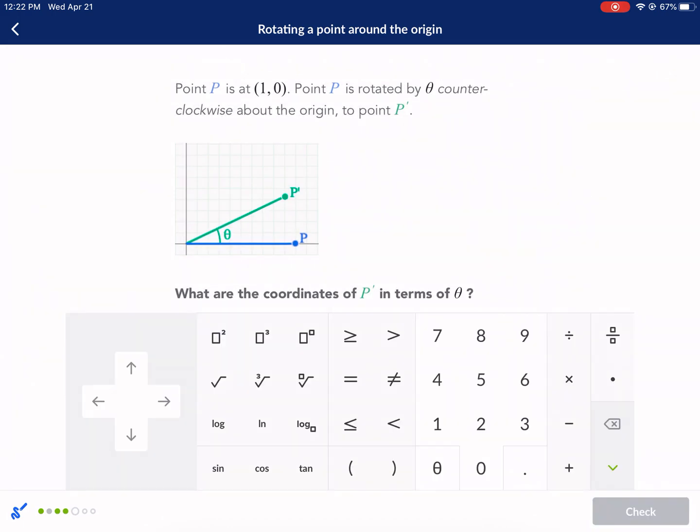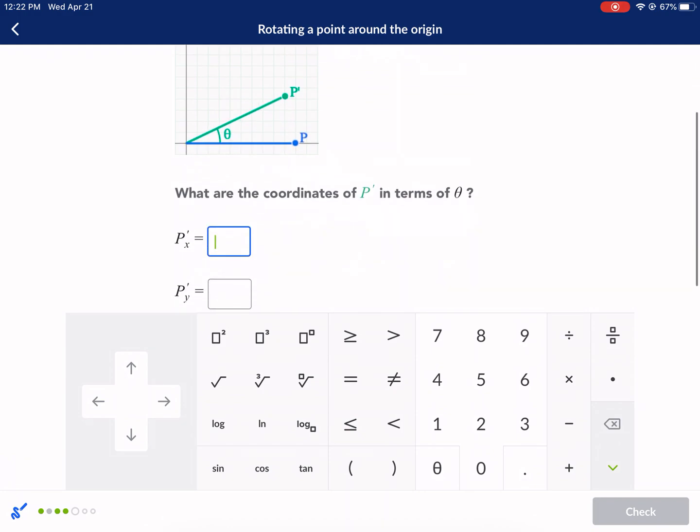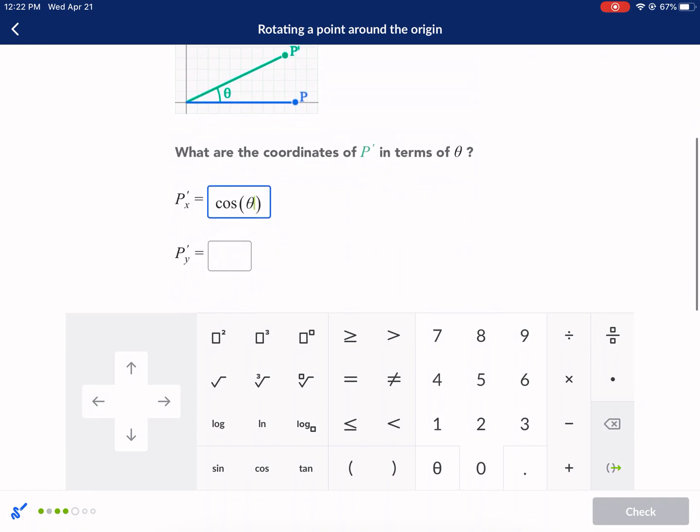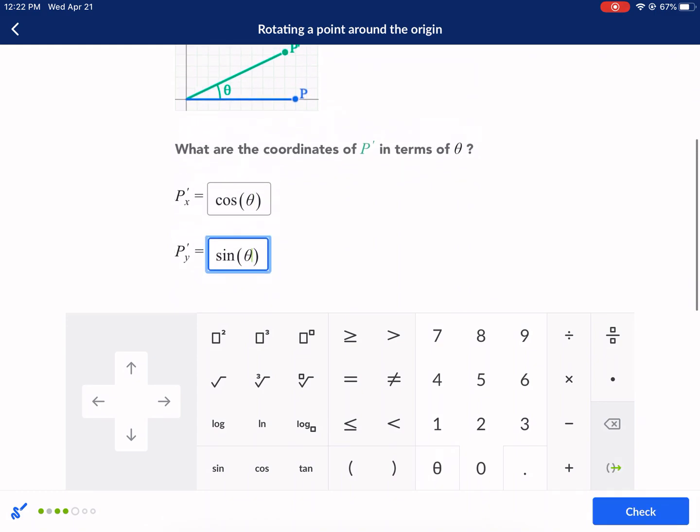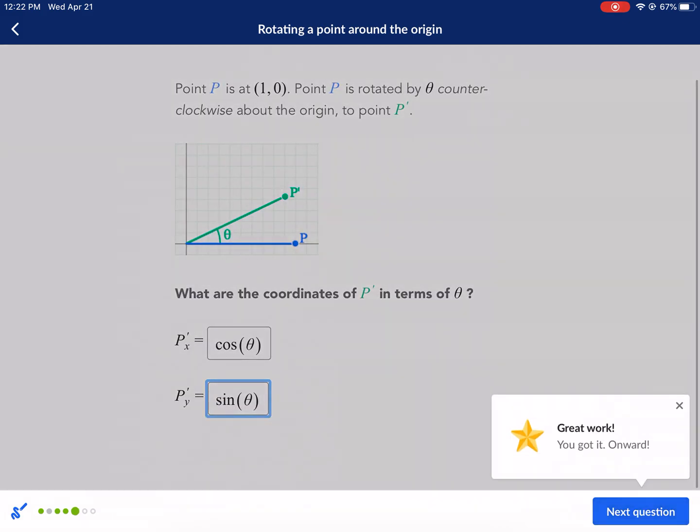In terms of theta, we already talked about this. It's in the first quadrant. So we can go ahead and say that it's cosine. And it's going to be positive. And then it's sine. And it's going to be positive also.